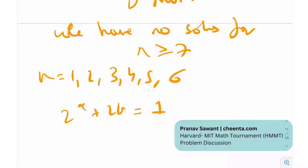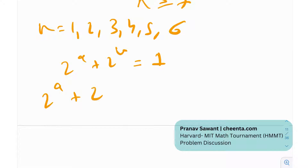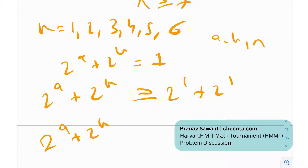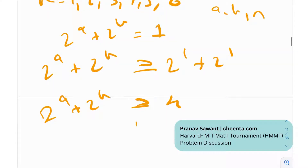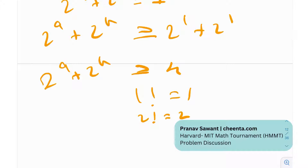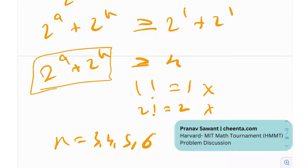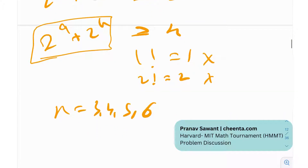So n can only be 1, 2, 3, 4, 5, or 6. Also, n = 0 gives 0! = 1, which has no solutions. Since a and b are natural numbers, 2^a + 2^b ≥ 2^1 + 2^1 = 4, but 1! = 1 and 2! = 2, so n cannot be 1 or 2. Therefore n ∈ {3, 4, 5, 6}.